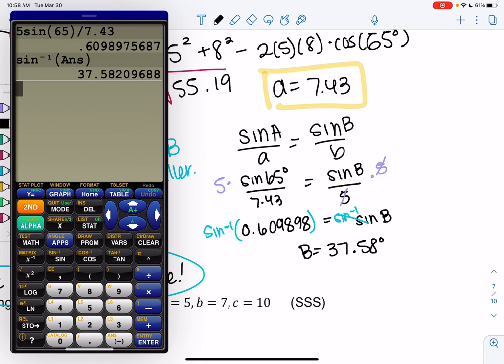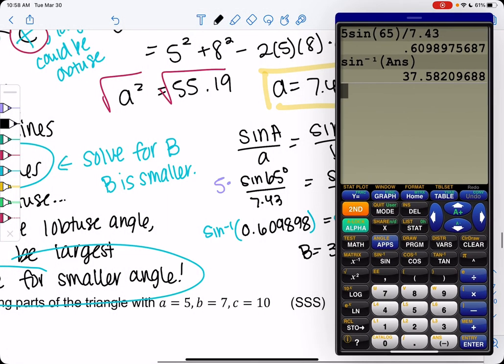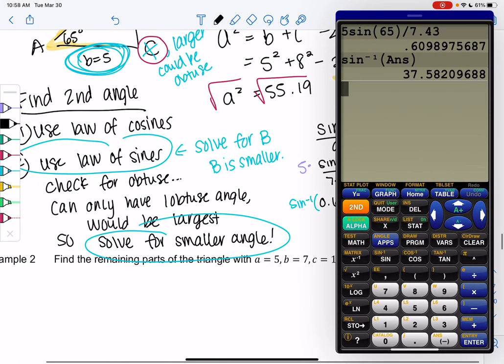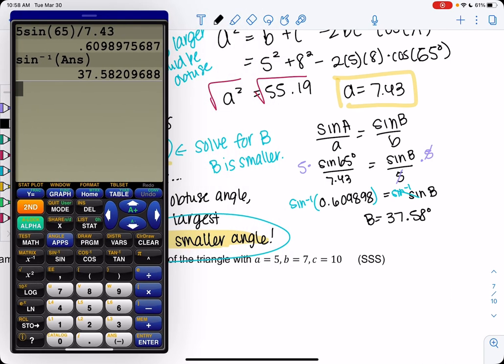But law of cosines was more work if you decided to try it. So law of sines is fine as long as you solve for the smaller angle. Very important. If you don't identify which one's smaller, then you have to use law of cosines.